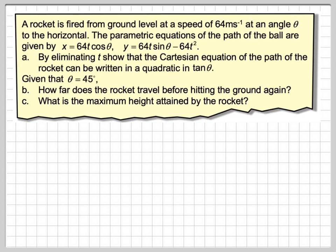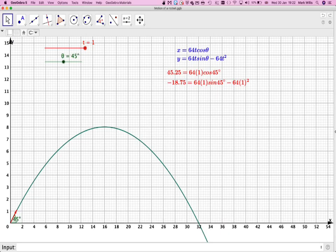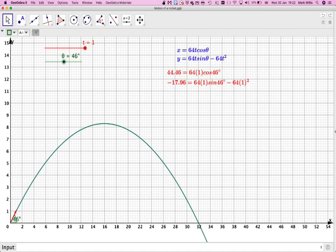Before we actually do the question, let's just have a look graphically at the situation. So this GeoGebra applet that I've made, I will attach to the video. What we've got here is a rocket being fired at 45 degrees. The rocket can be fired at different angles.